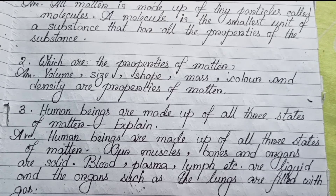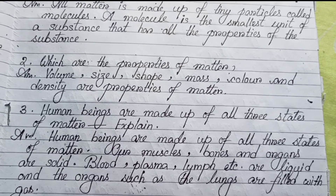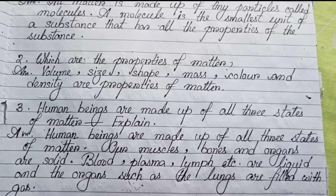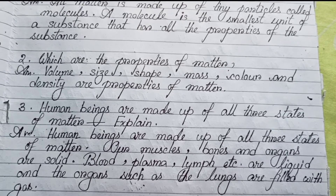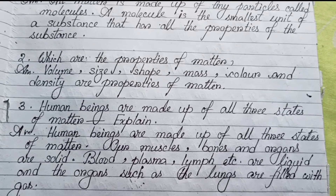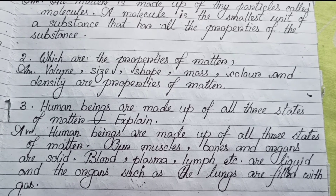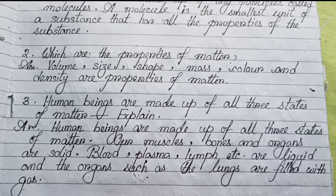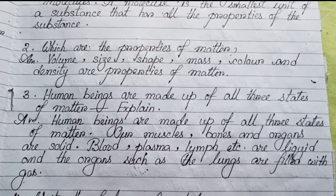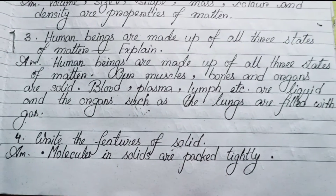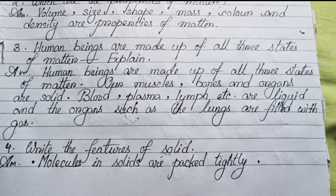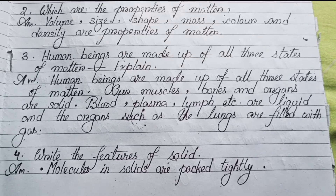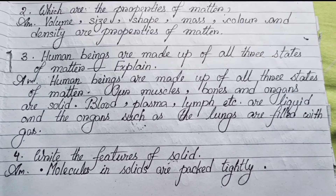Our muscles, bones, and organs are solid. Blood, plasma, lymph, etc. are liquid. Organs such as the lungs are filled with gas. Number 4: Write the features of solid. Molecules in solids are packed tightly.